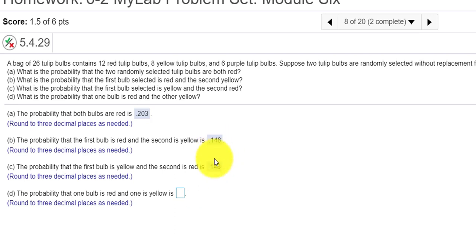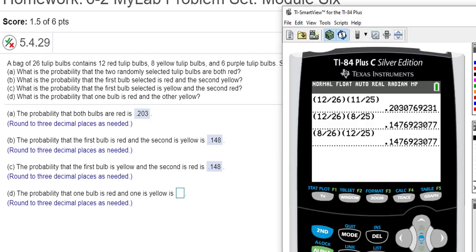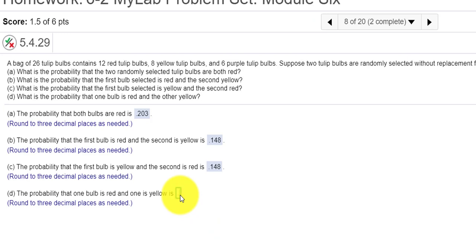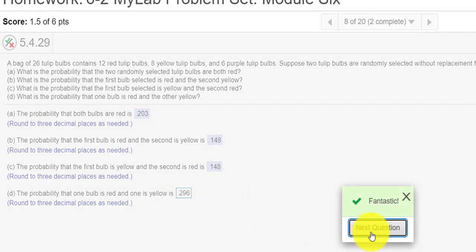So essentially, if we add these two probabilities, we're guaranteed to have one red, one yellow. And we don't know what the order's going to be, but we add 0.148 and 0.148 plus 0.148. If we add those two probabilities, we get 0.296. And we get the fantastic.